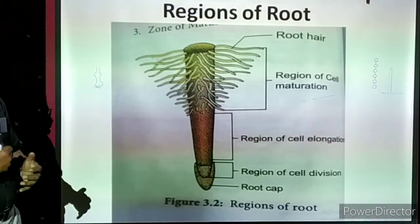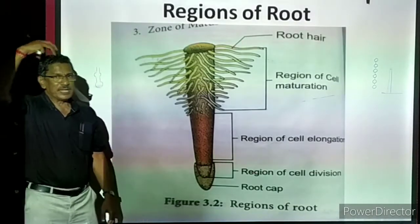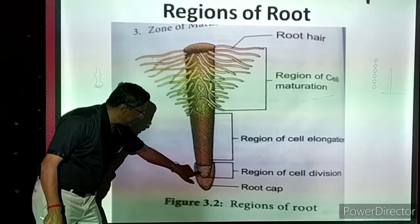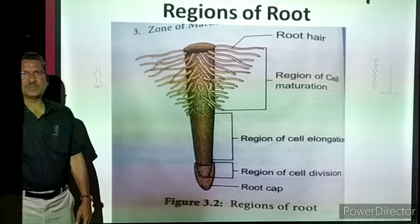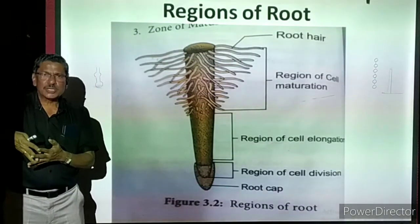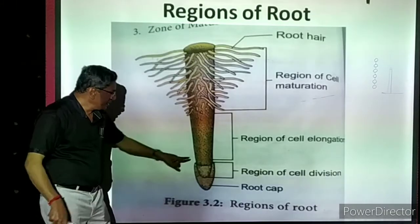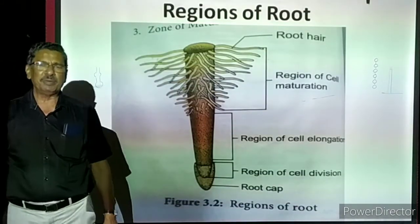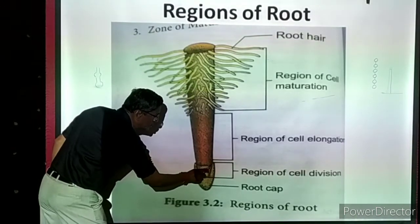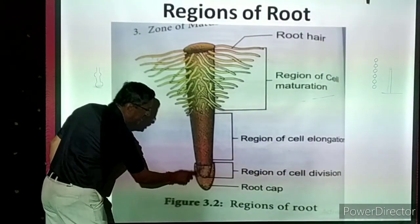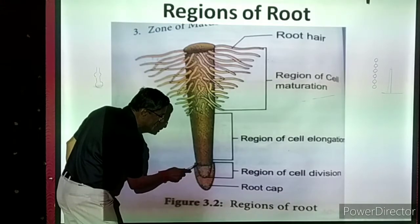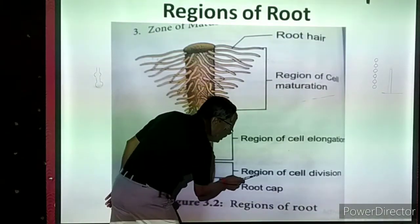The root cap is a hard, cap-like structure covering the tip of the root. The root has to grow into the soil, which is rough and hard. The rough particles of the soil may damage the original tip of the root, so the cap protects the soft region of the root tip. The root cap is very important to protect the soft root tip.